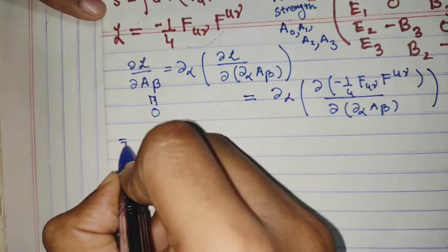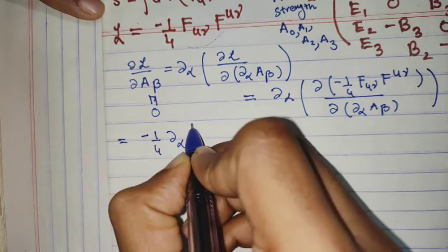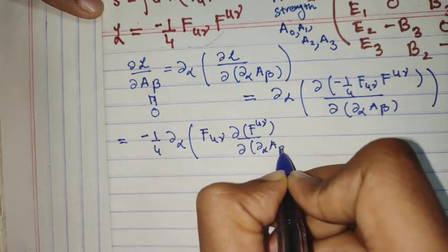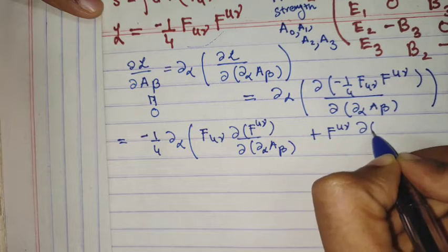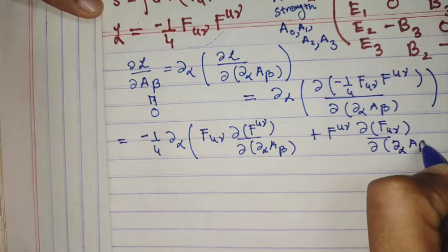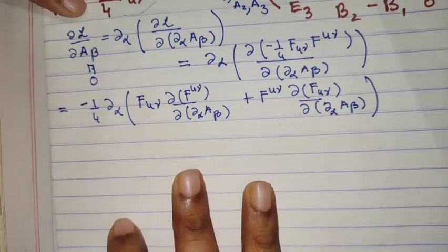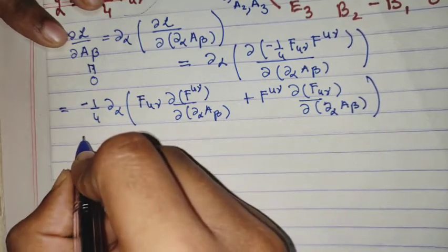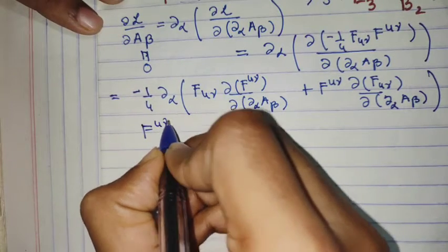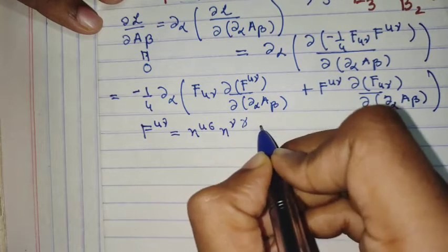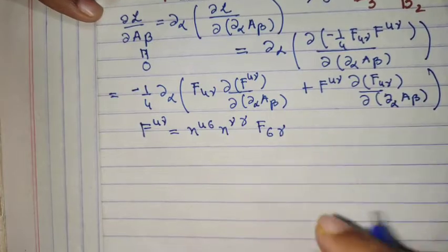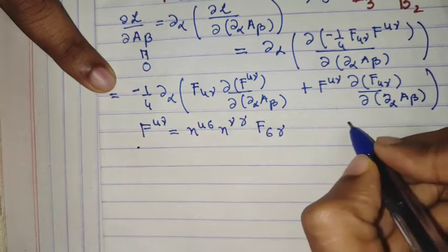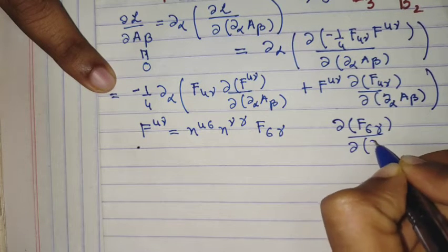We simplify this as −¼ ∂_α, and applying the chain rule we get: F^μν ∂F_μν/∂(∂_α A_β) + F_μν ∂F^μν/∂(∂_α A_β). Since F^μν = η^μσ η^νγ F_σγ (raising indices), we can handle both terms in a single shot by computing the derivative ∂F_σγ/∂(∂_α A_β).